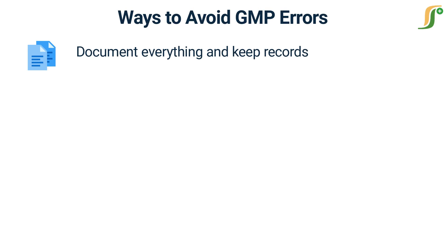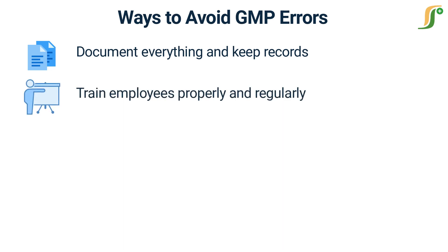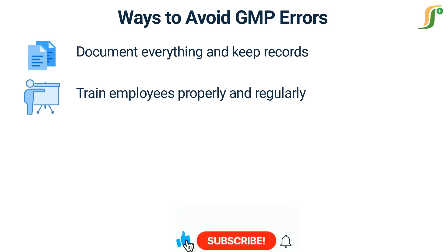Train employees properly and regularly. Proper training is critical for ensuring that employees understand GMP regulations and how to comply with them. Training should be ongoing and cover all aspects of GMP, from basic hygiene and sanitation practices to more complex topics like quality control and record keeping.